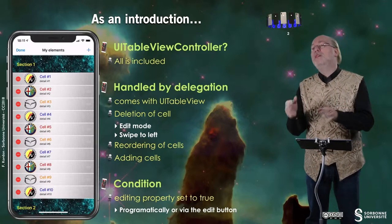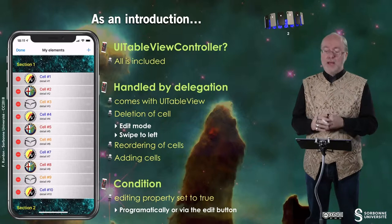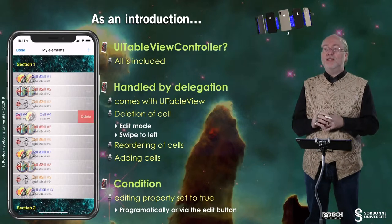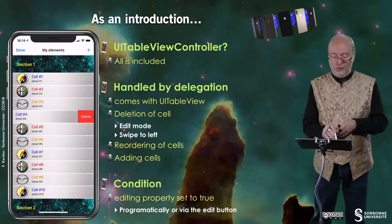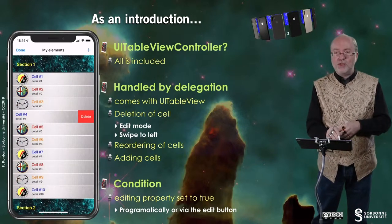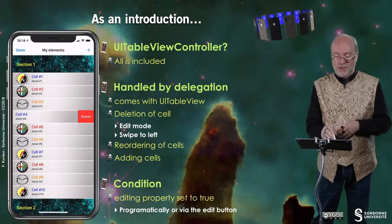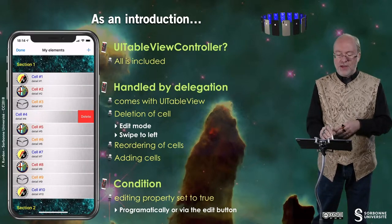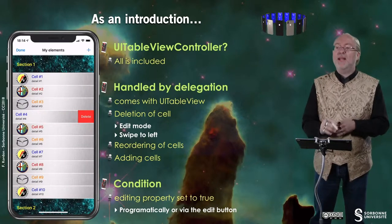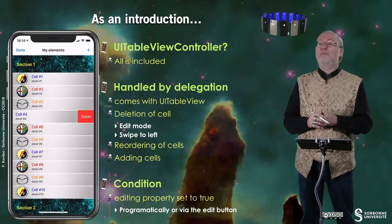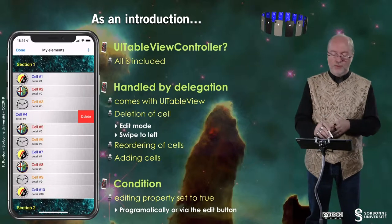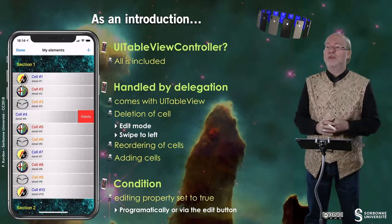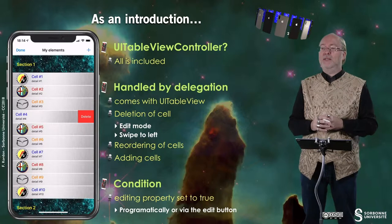You will see how you handle that programmatically. You can also delete a cell by doing this swipe gesture, and when you do that, you have the delete button that appears, and if you tap on delete, the cell disappears.